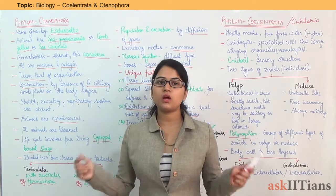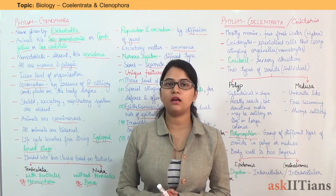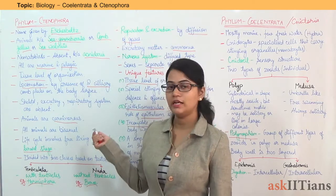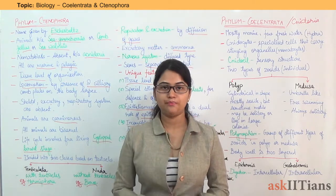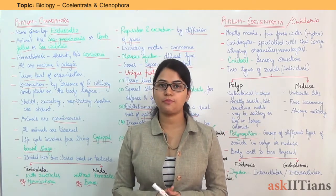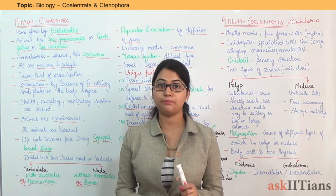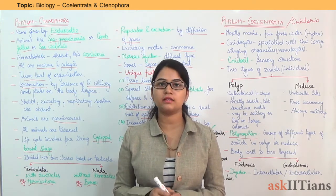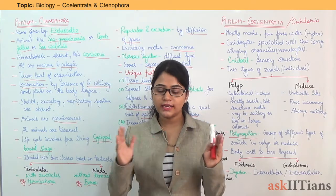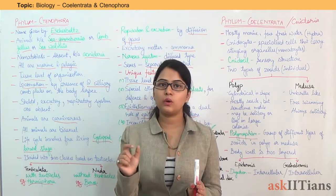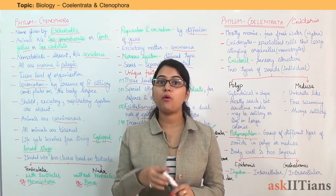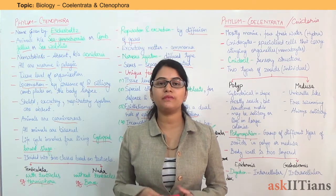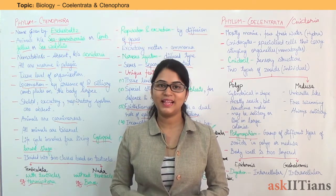So this is all about these two phyla — Phylum Coelentrata and Phylum Ctenophora. Revise all these points and make notes — beautiful, clean, and clear notes. Use markers and mark the important points as well. In our next lecture, we will cover the next phylum. Thank you.